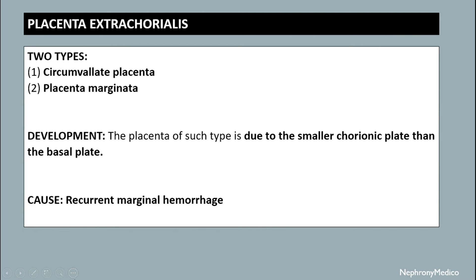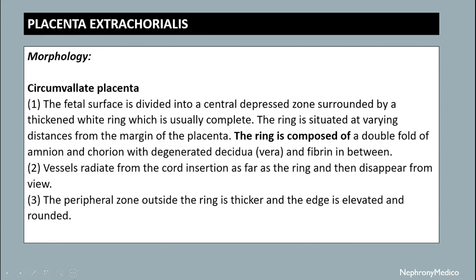Development: this type of placenta is due to a smaller chorionic plate than the basal plate. The cause is recurrent marginal hemorrhage. Morphology of circumvallate placenta: the fetal surface is divided into a central depressed zone surrounded by a thicker white ring.